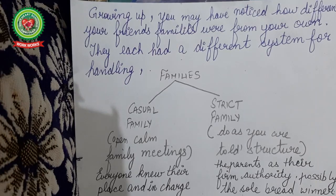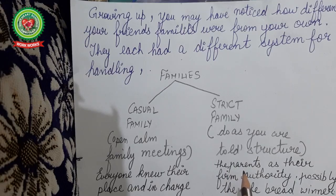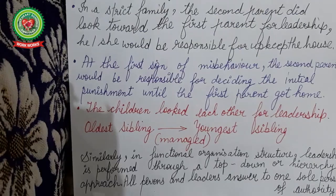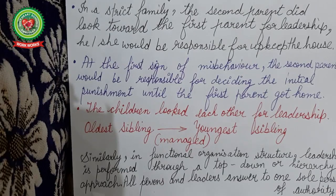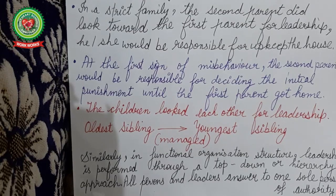In a strict family, the approach is 'do as you are told' — you have to do only what is told. The parents are the firm authority, possibly because they are the sole breadwinner. In a strict family, the second parent looks toward the first parent for leadership. The second parent — say, the mother — works according to the guidance of the first parent and is responsible for upkeeping the house, taking care of children, and maintaining the kitchen.